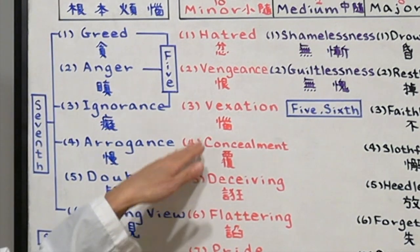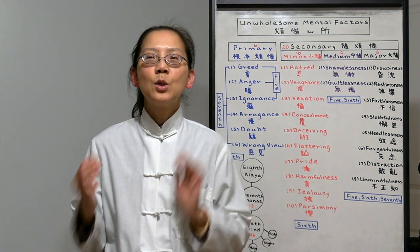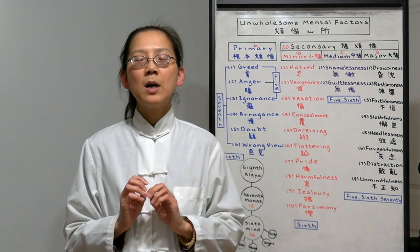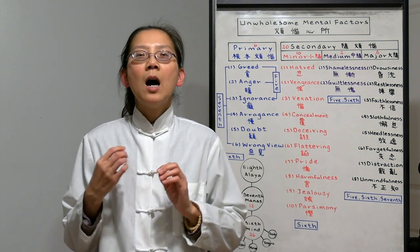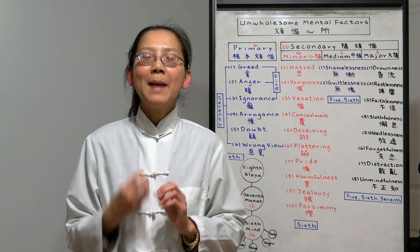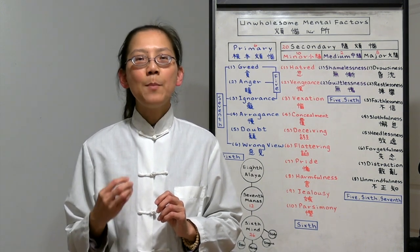Number four is concealment. When we do something wrong, we are likely to cover it up. Because we want to have a good image of ourselves. That's why we conceal our mistakes or our bad habits and bad behavior. But when we conceal our bad deeds, negative karma will grow bigger.